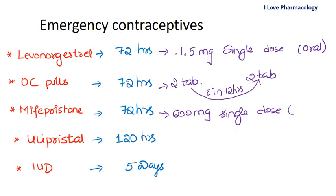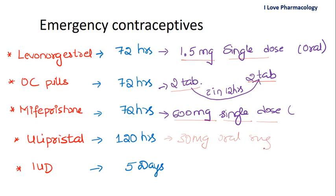The dose of levonorgestrel is 1.5 mg orally as a single dose. For combined oral contraceptive pills, two tablets should be taken immediately, followed by another two tablets within 12 hours of the first dose. Mifepristone is given as 600 mg orally as a single dose. Ulipristal is given as 30 mg orally as a single dose. The intrauterine device can be inserted within 5 days.